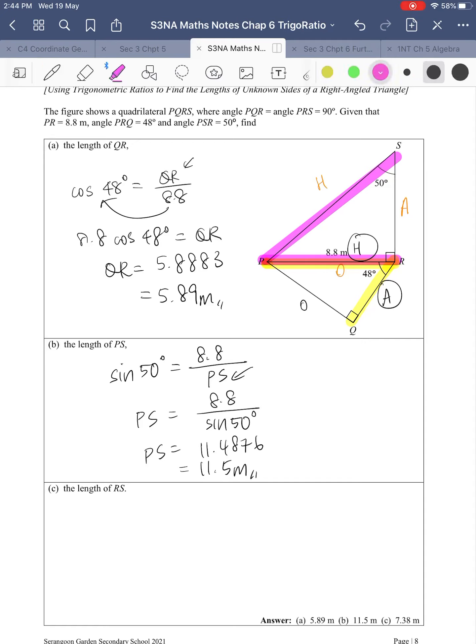And the length of RS. Same thing: I have H, I have opposite, and I want to find the adjacent, so tangent. Tangent 50 equals 8.8 over RS. You know the drill: unknown at the bottom, just have to swap the positions of tangent 50 and RS.